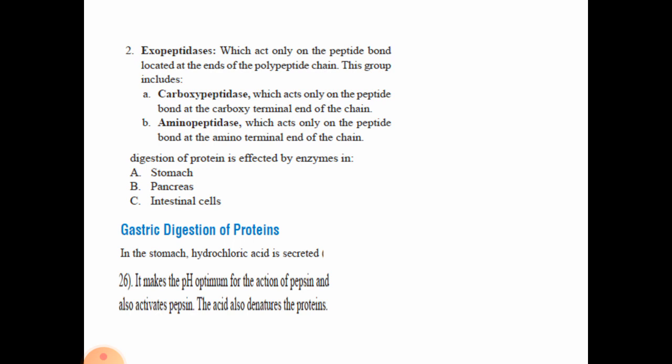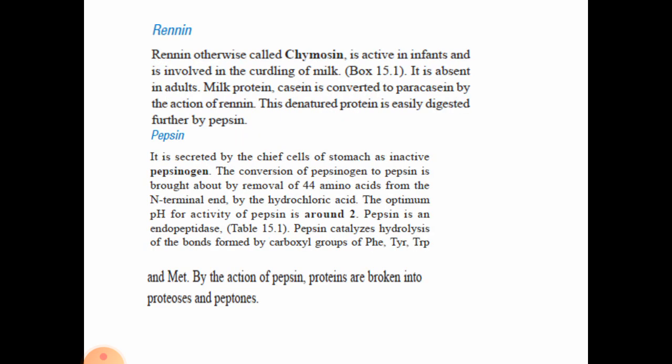Digestion of proteins is affected by enzymes present in the stomach — the exo and endo peptidases acting upon peptide bonds. These smaller protein units are then acted upon by enzymes in the stomach, pancreas, and intestinal cells. In gastric digestion, hydrochloric acid maintains the optimum pH for enzyme activity. Pepsin is activated by hydrochloric acid providing the optimum pH, and the acid also denatures proteins — so acid helps in both enzyme activation and protein denaturation.